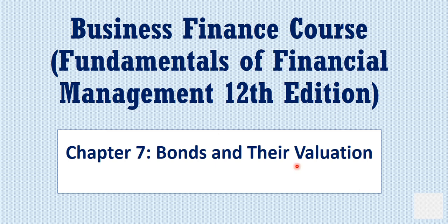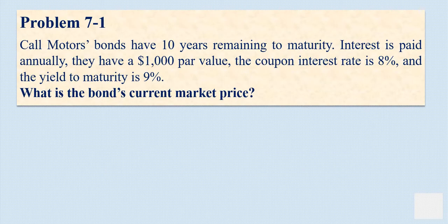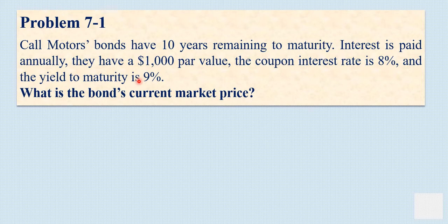Chapter 7: Bonds and their Valuation. In this video, we are going to solve Problem 7-1 about bond valuation. Coal Motors bonds have 10 years remaining to maturity. Interest is paid annually. They have a $1,000 par value. The coupon interest rate is 8% and the yield to maturity is 9%. What is the bond's current market price?